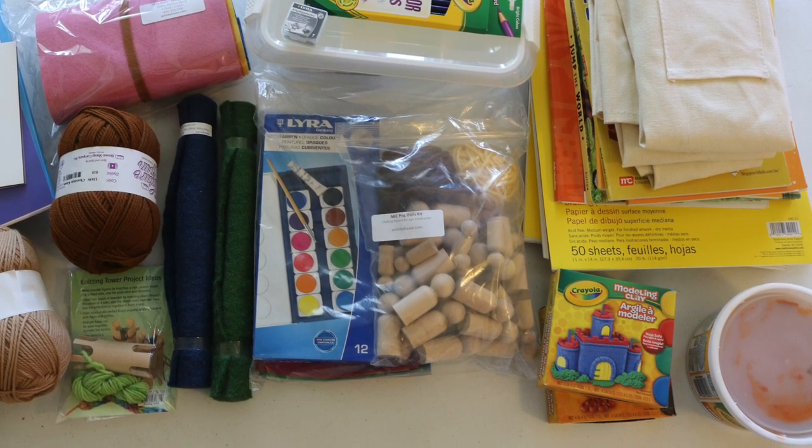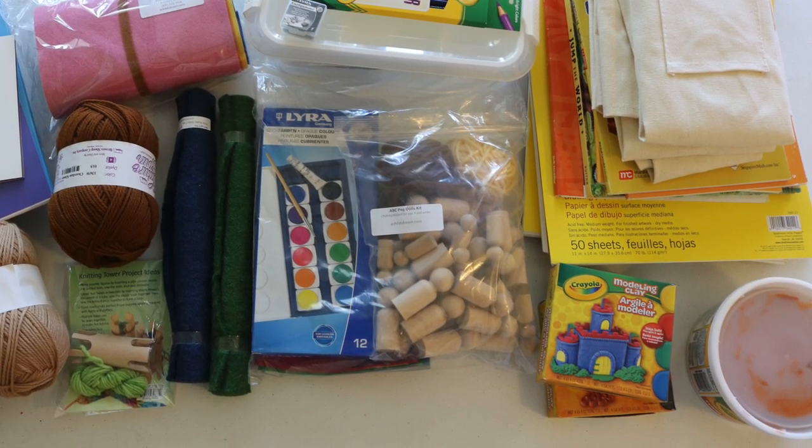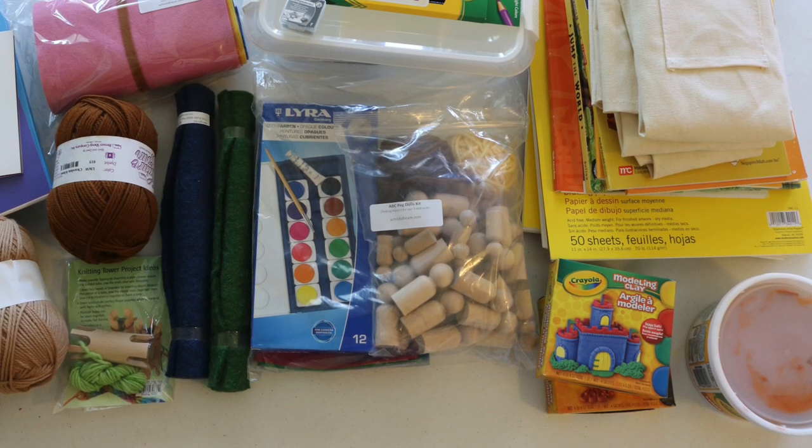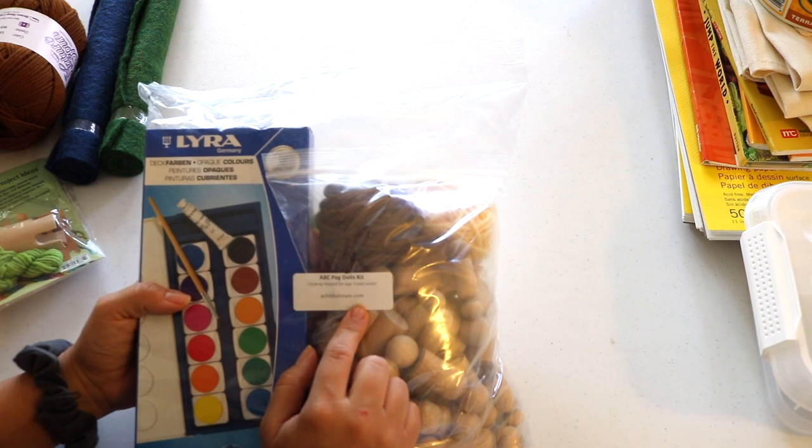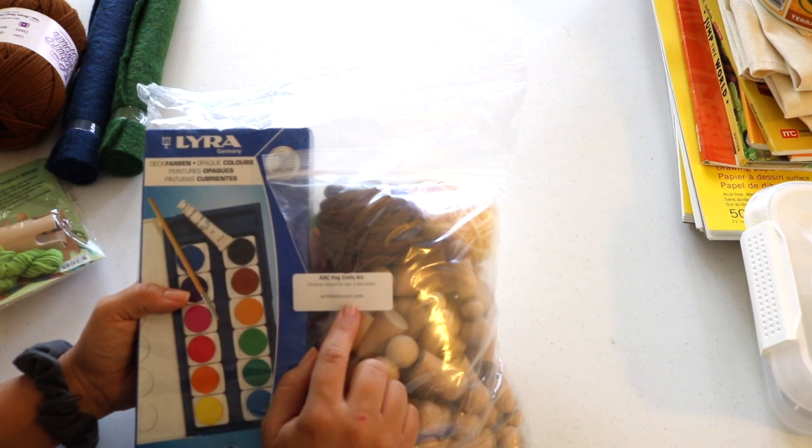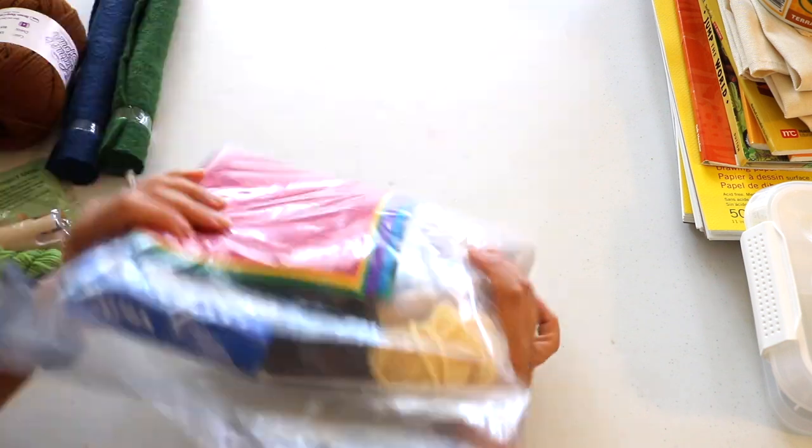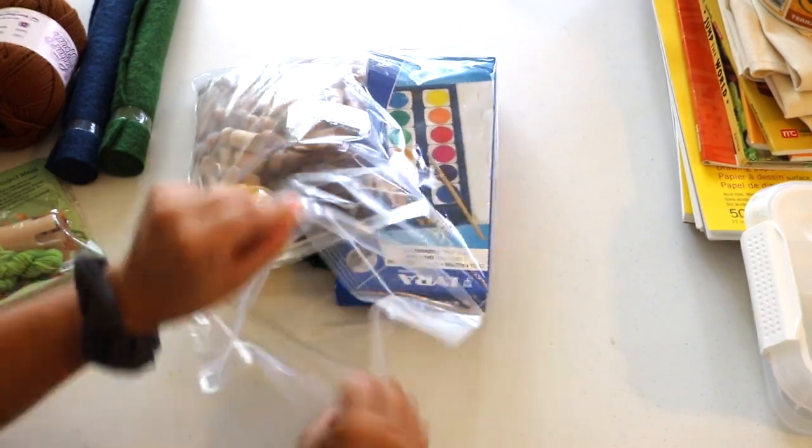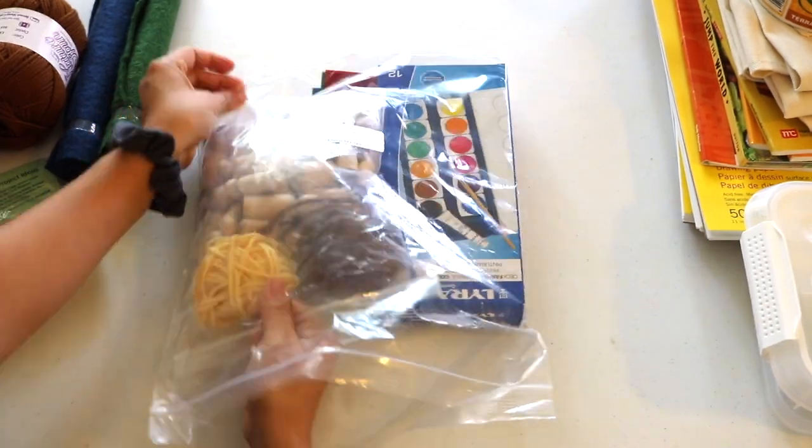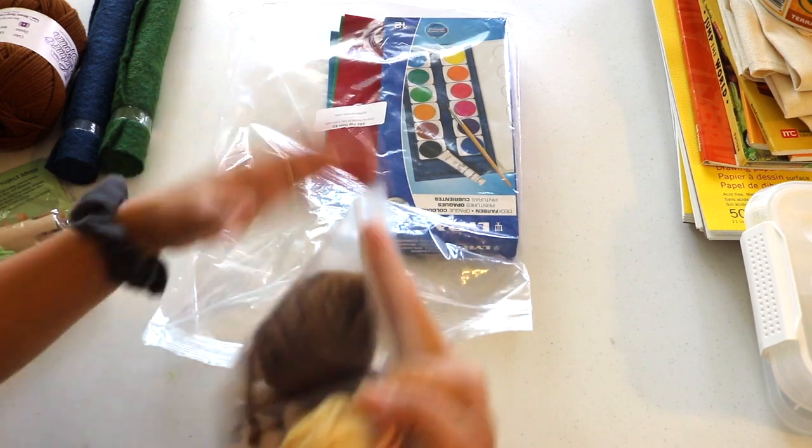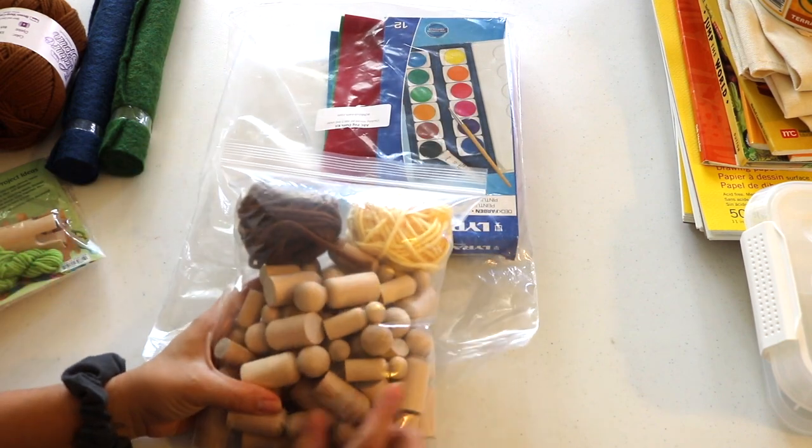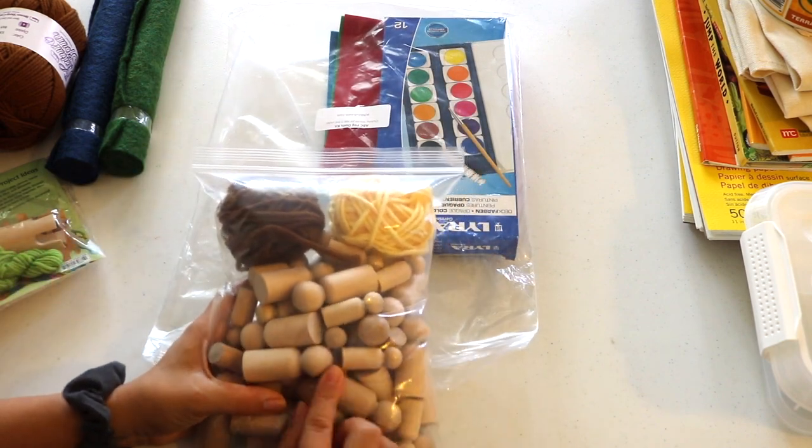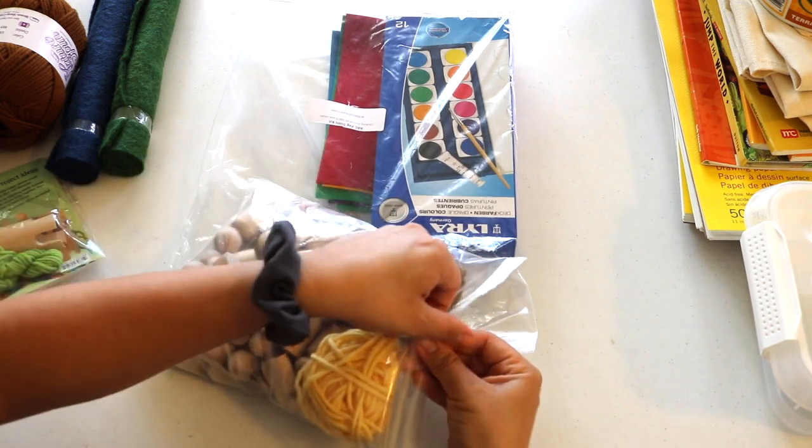Our regularly scheduled school programming will resume mid-July, beginning with my purchases from achildsdream.com. My first purchase is the ABC's peg doll kit. This is to make your own alphabet peg dolls, and this is primarily for my four soon to be five year old and my toddler. She'll soon be three and she loves her peg dolls.